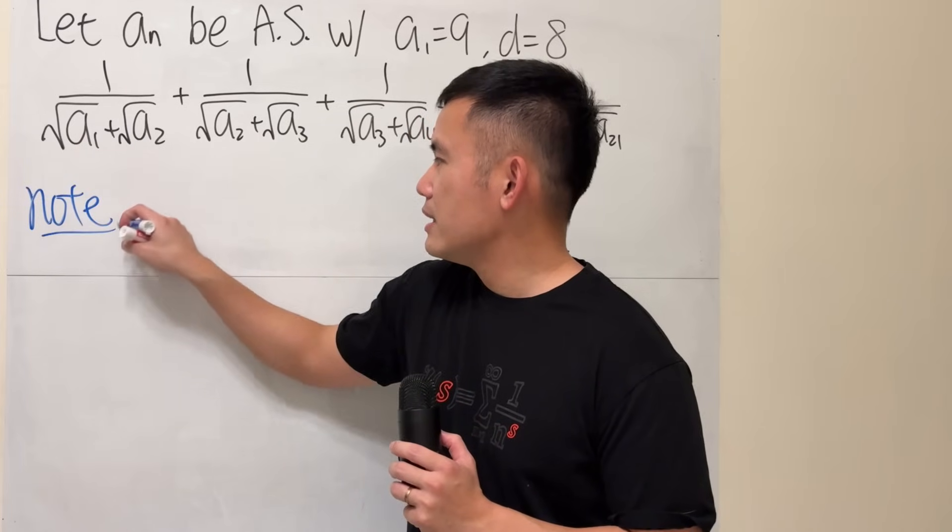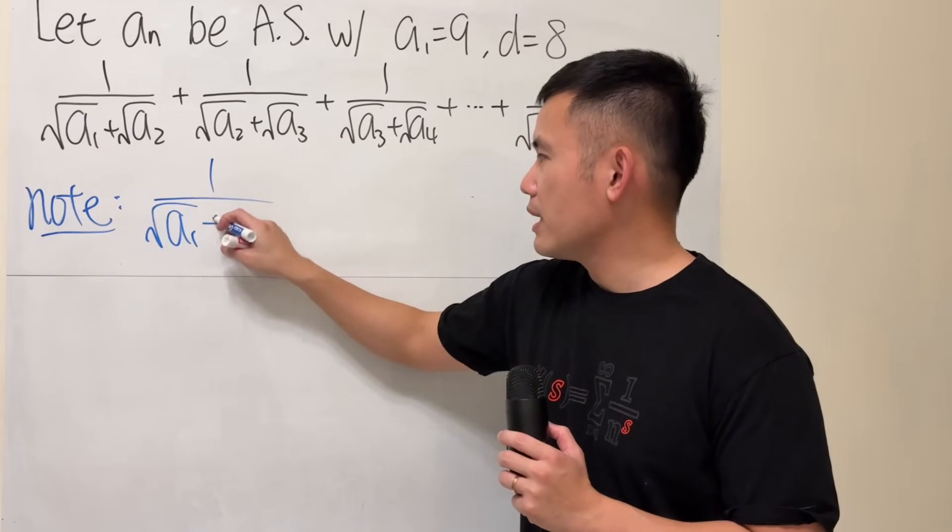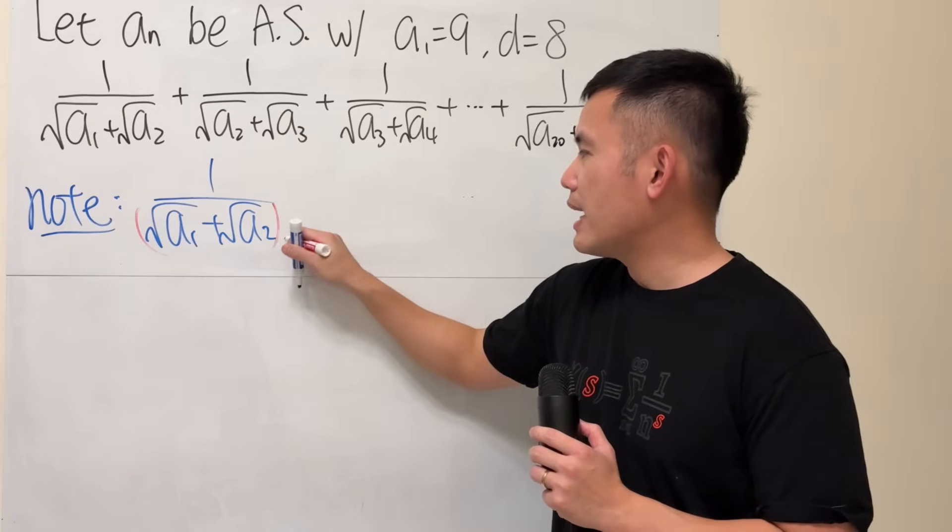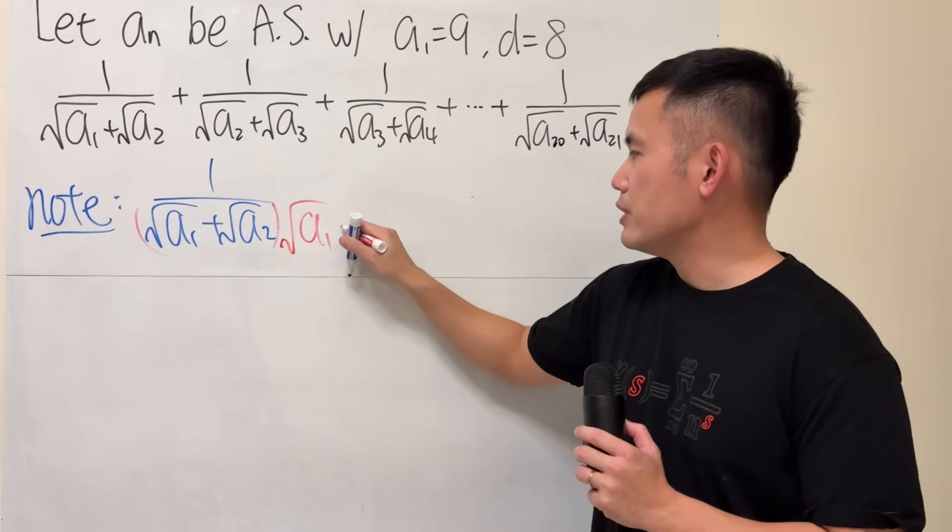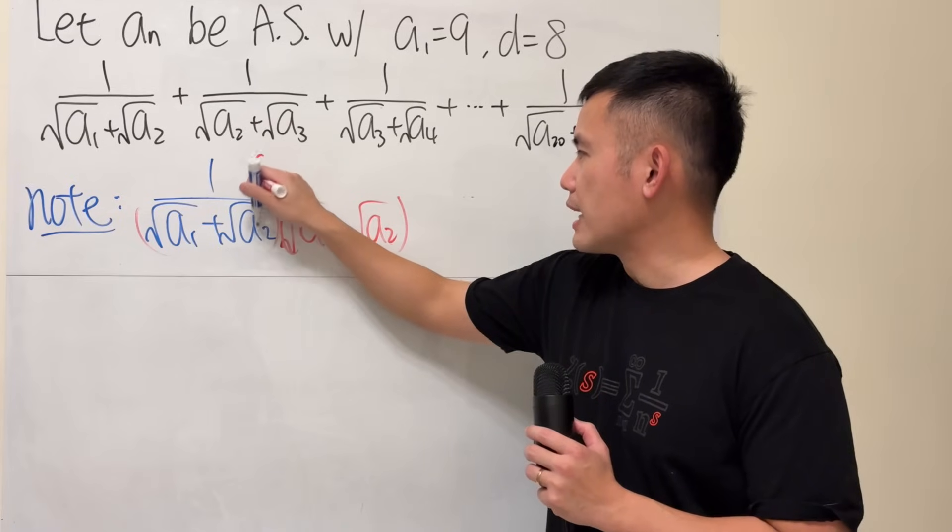So, note that if we look at 1 over square root of a1 plus square root of a2, multiply this by its conjugate, which is a minus in between, and do the same thing on the top.